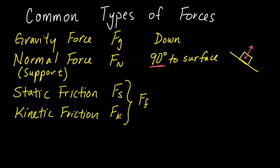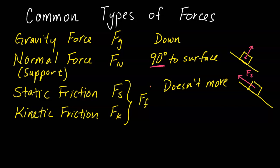Next we have static and kinetic friction. The symbol for static friction is Fs and for kinetic friction is Fk. Static friction is when the object doesn't move. For example, if we have a box on an incline and it's not moving, there is a static friction up the incline labeled Fs. Static friction is parallel to the surface and opposes the direction the object would move if there were no friction — so if the box would slide down, static friction is up the incline.